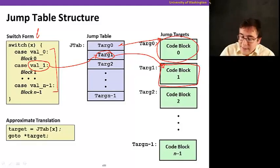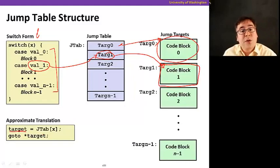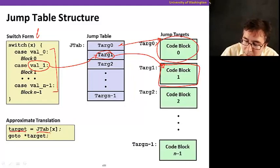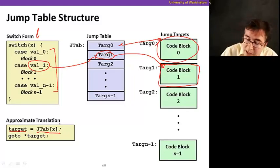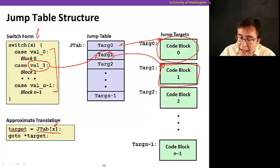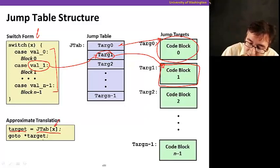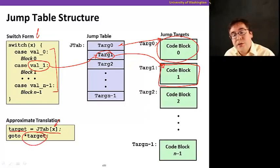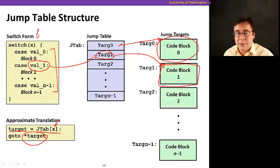One way to think about this is the following: you could have a variable called target which holds the target address for a given option. We're going to look up our jump table, which is just an array of instruction addresses. We're going to index that array with x, get the value stored in target, and jump to it — do a goto to that instruction address.